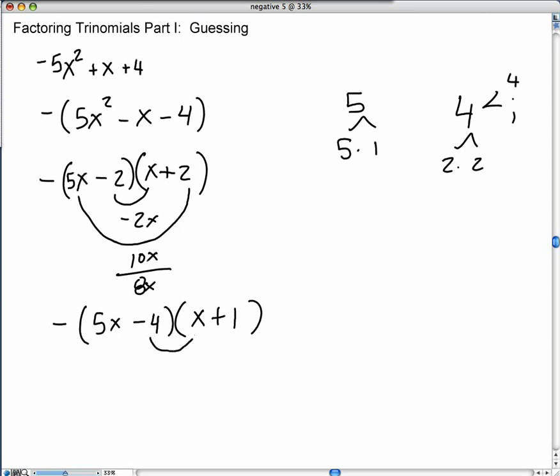But the linear term, what does that give you? So negative 4 times x is negative 4x, and 5 times 1 gives you 5x, pretty close. This gives you x, a positive x, not a negative x. So that's not going to work either.